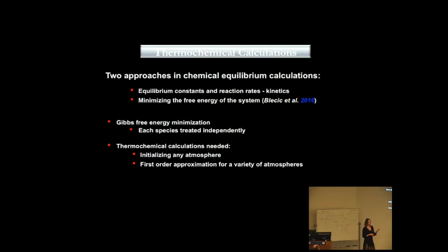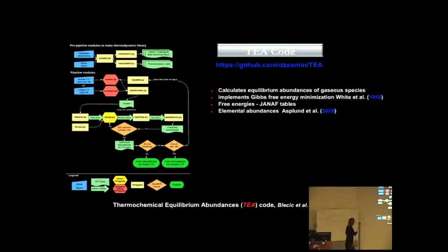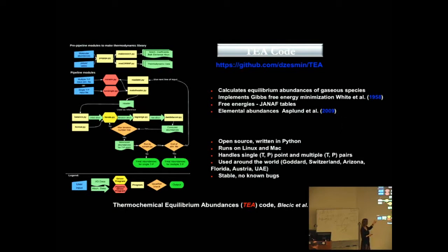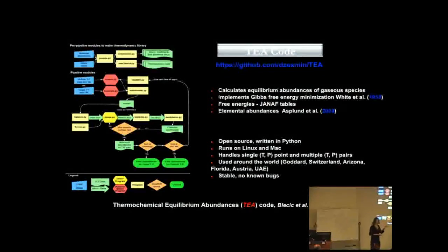So, thermochemical equilibrium calculations are needed for modeling any planetary atmosphere, even if you want to do photochemistry, forward or retrieval methods. Thermochemical equilibrium calculations can be used as a first order approximation for a variety of atmospheres. This is TEA, the layout of the TEA code. As I said, it uses Gibbs free energy minimization, following White et al., it uses JANAF tables, and it is an open source code written in Python. It runs on Linux and Mac. It's been out there for the last two years, and many groups around the world are using it. It is very stable; there are no known bugs in TEA.